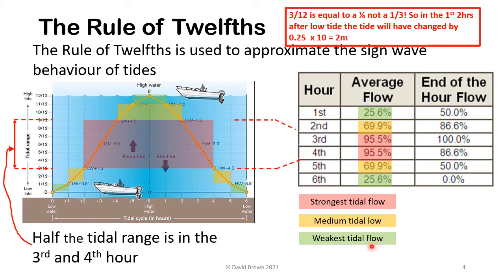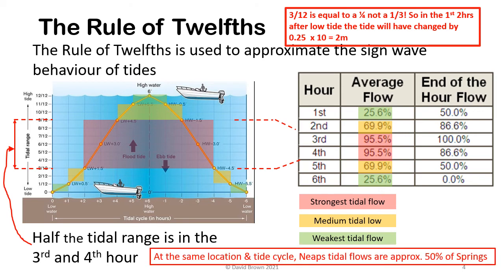The weakest tidal flow occurs around slack water. One final point: at the same location and tide cycle, the neaps tidal flow is 50% of springs. So paddling on a neap tide means roughly half the flow of the corresponding spring tide — quite a significant difference.